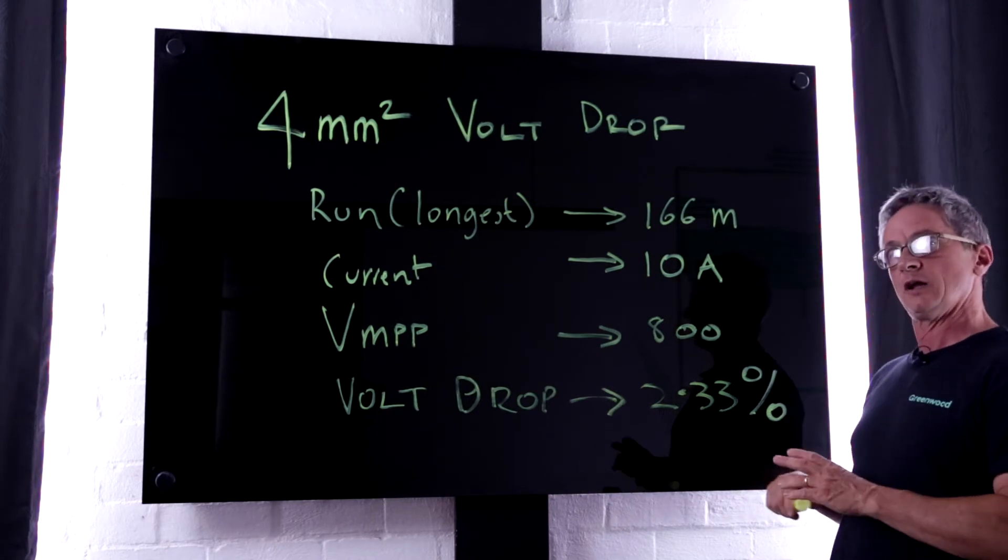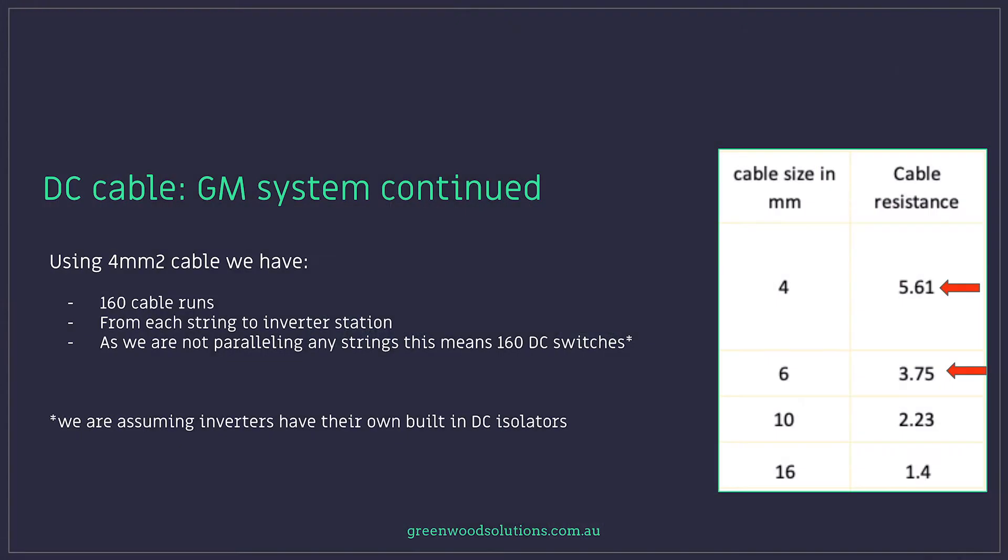We're getting up pretty close to that 3%. Using 4mm cable we have 160 cable runs from each string to the inverter station. As we are not paralleling any strings this means 160 DC switches and we are assuming the inverter have their own built-in DC isolators or DC switches.